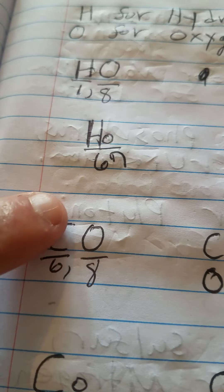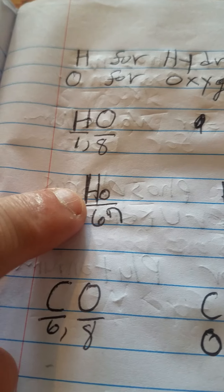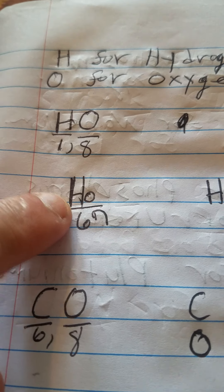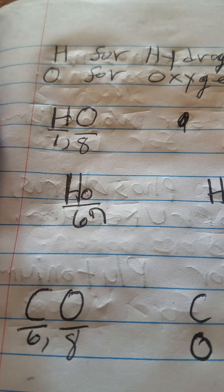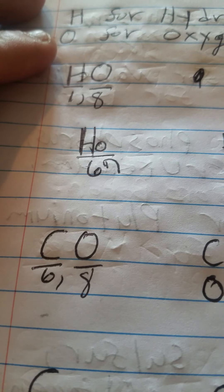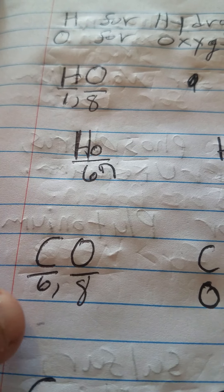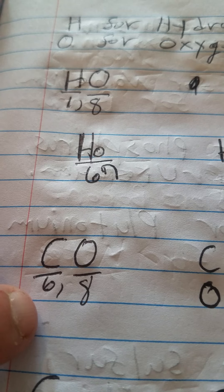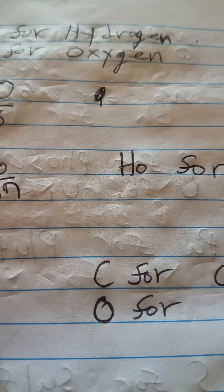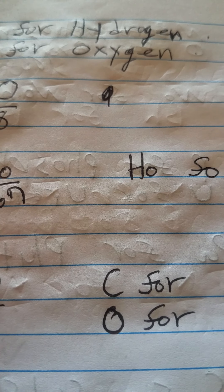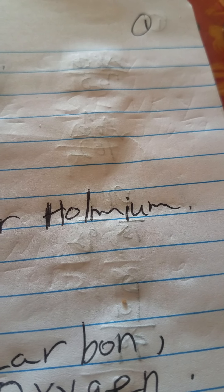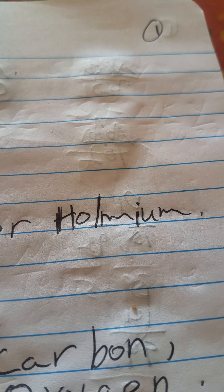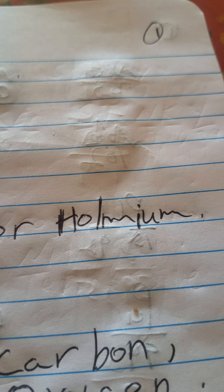Now you have another chemical symbol: capital H and small O. You have a new atomic number — the atomic number is 67. The chemical symbol is capital H-O for holmium, which is spelled H-O-L-M-I-U-M.